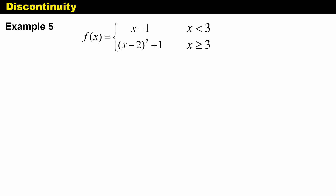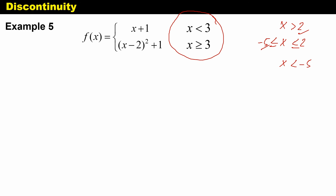Now let's look at a piecewise function. Since it is piecewise, we already know it has a jump discontinuity. To identify the point of discontinuity, consider the boundary values in the conditions given. In this case we only have 3, so the point of discontinuity is at x = 3. If conditions involved values like 2 and -5, you would consider both of those. Let's verify that x = 3 is actually a point of discontinuity.